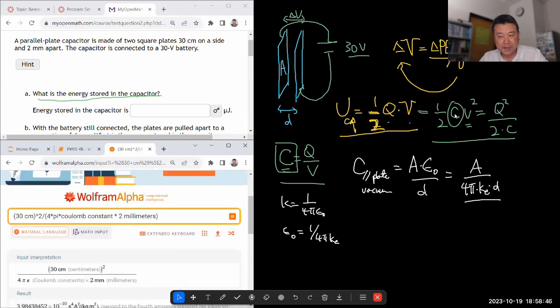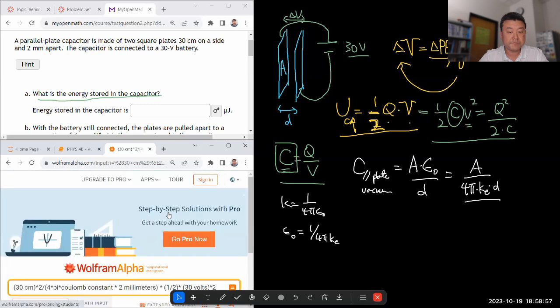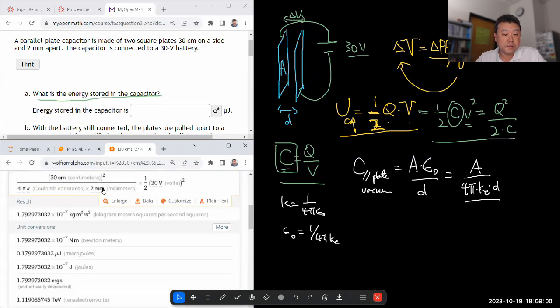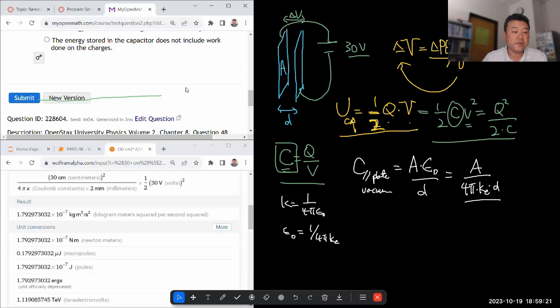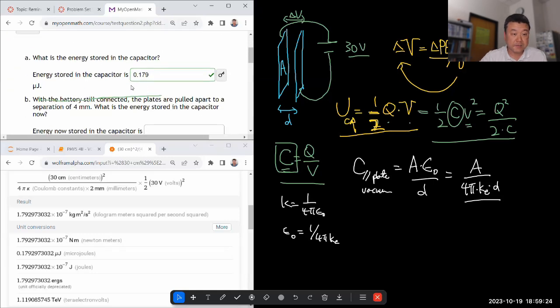So I take the capacitance, multiply it to one half times the voltage squared. So take this, multiply it to one half times the voltage, 30 volts squared. So that, yeah, I get energy units. Okay, microjoules, good. 0.18 or 179 microjoules. Let me keep three significant figures since that's my advice to you. My advice to you in terms of significant figures is keep minimum three significant figures. That way you don't introduce unnecessary rounding error. Okay, that's correct.